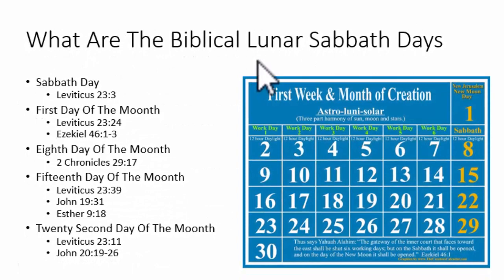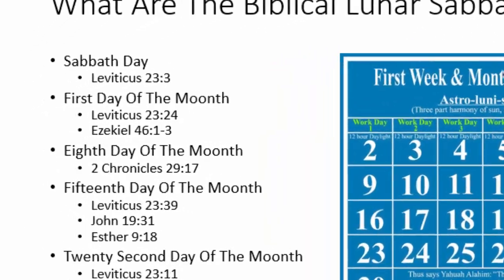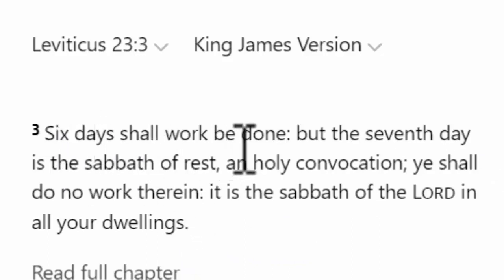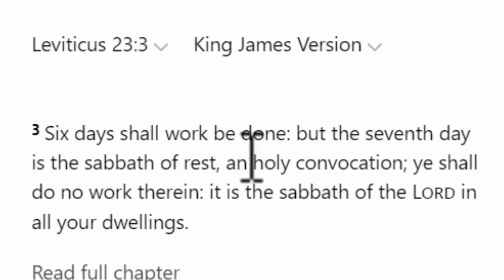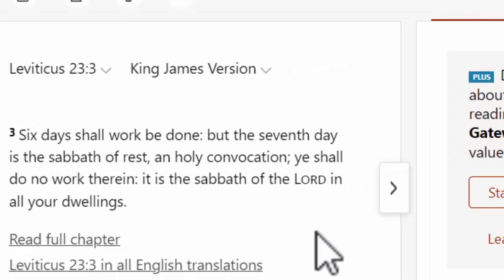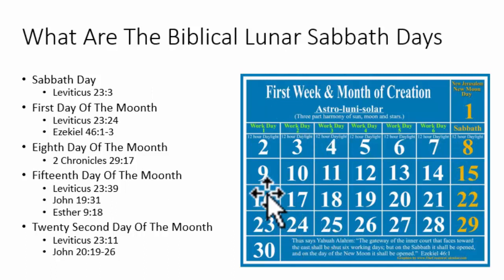Let's look at how we determine the days on which Sabbath days occur. Leviticus chapter 23 verse 3 talks about when the Sabbath occurs. It says six days shall work be done, but the seventh day is the Sabbath of rest. It doesn't tell us which day of the month; it tells us we are only allowed to work six days. Working seven days in a row would be against the instructions of the Bible. So from that verse, we know there are six working days and then a Sabbath day.